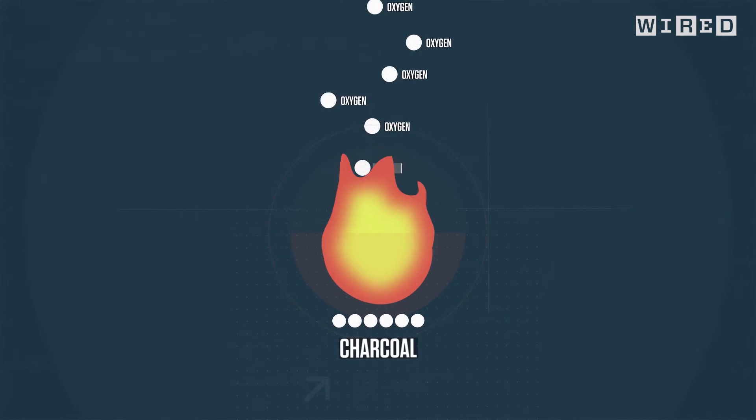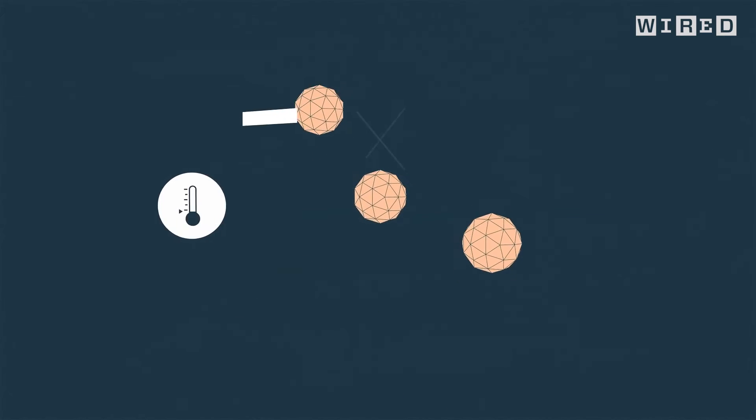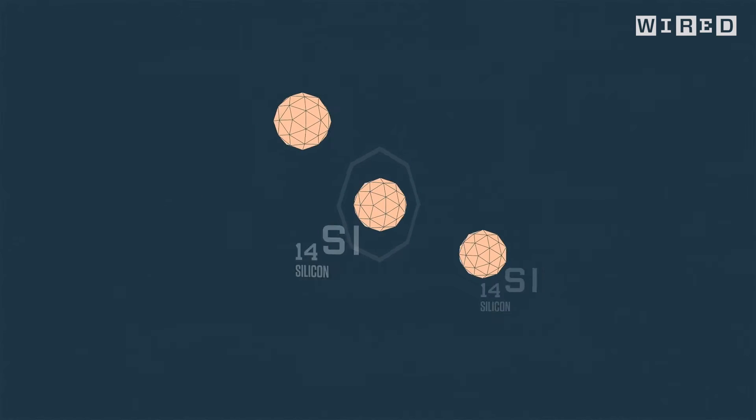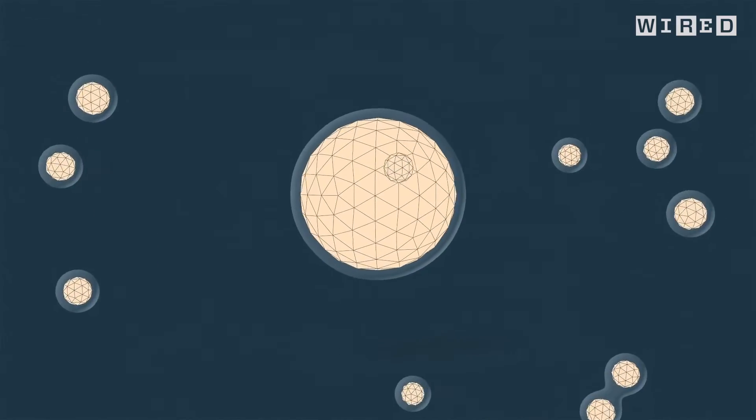And as it burns, it releases oxygen, fueling the fire. At 2500 degrees, tiny grains of silicon melt into super hot pellets of glass that spatter and ignite other flammables in the mix.